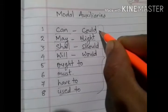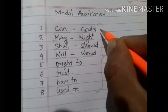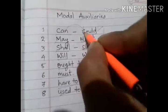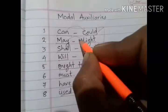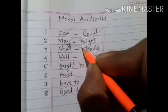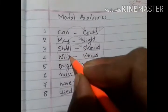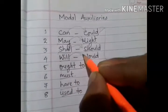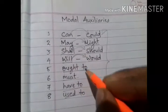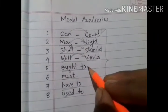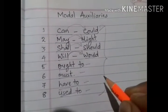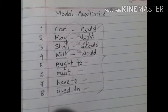In many cases, like in direct and indirect speech, we use could as the past tense of can, might as the past form of may, should as the past form of shall, and would as the past form of will. But these do not happen regularly. And ought to, must, have to, and used to are also common modal auxiliaries that we use in our daily language.